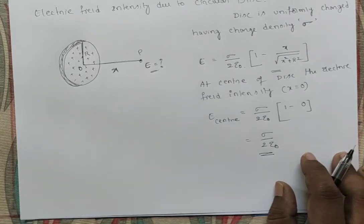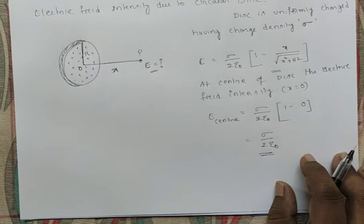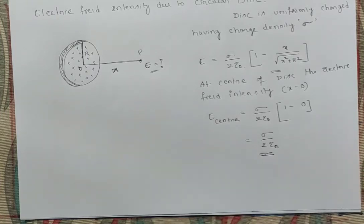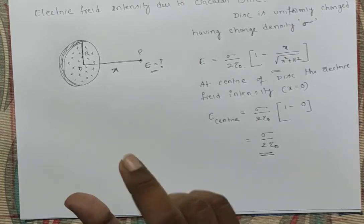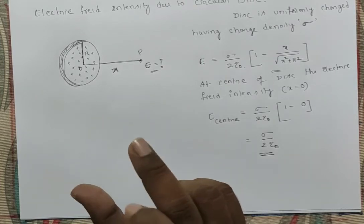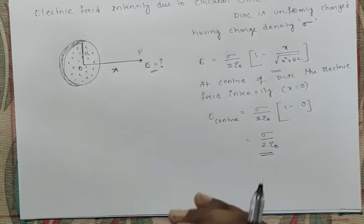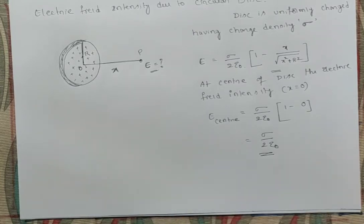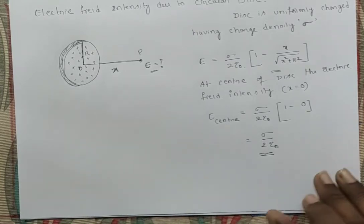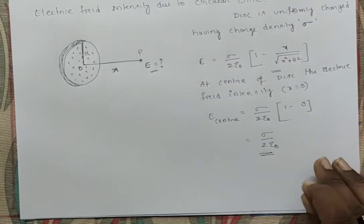These are the different cases we have discussed: charged rod, charged ring, and charged disc, and their respective electric field intensities. Next we go for the solid angle concept.